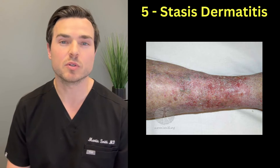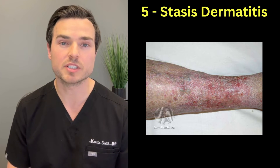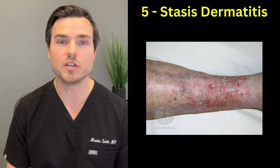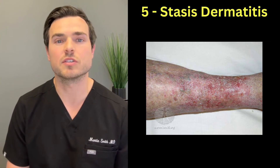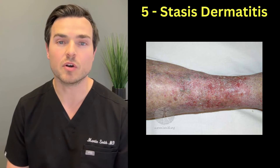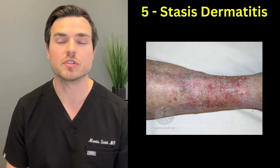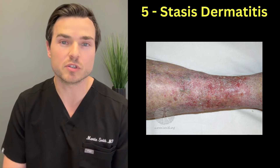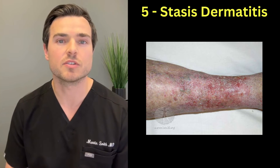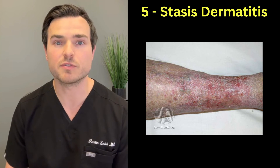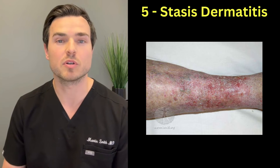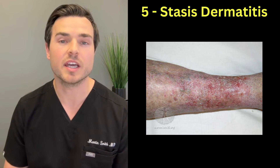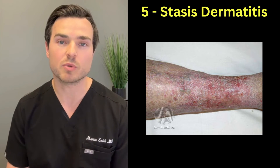The fifth type of eczema is stasis dermatitis or venous dermatitis — red, darkened patches that usually occur on the lower legs. It typically occurs in older individuals with venous insufficiency or heart failure, where there's increased swelling or water retention. Treatment focuses on decreasing that swelling through light exercise, frequent walking, limiting prolonged standing, elevating the legs when lying down, and wrapping the legs to reduce swelling.